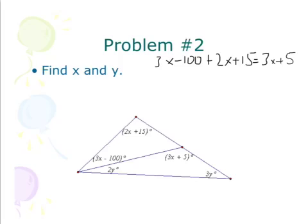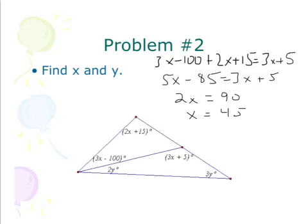So I can combine my like terms. I get 5x on the left minus 85 equals 3x plus 5. So I can subtract 3x and get 2x, add 85 and get 90, and I get x equals 45.